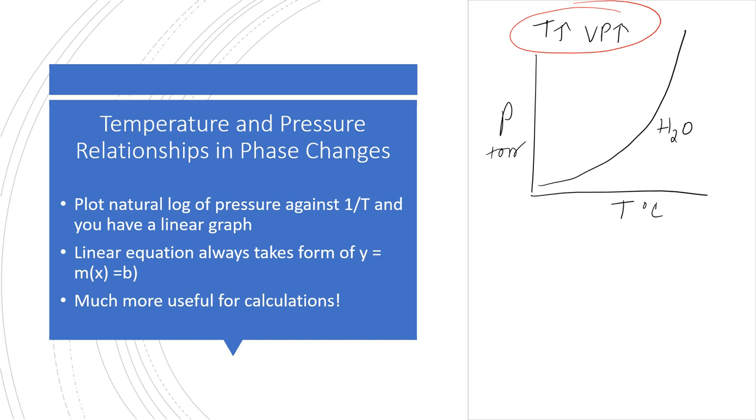So Clausius and Clapeyron derived an equation where if you plot the natural log of the vapor pressure against one over the temperature, you will get a linear graph. As you know, for any linear graph, y equals mx plus b.